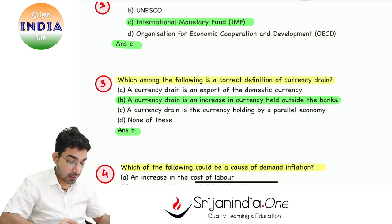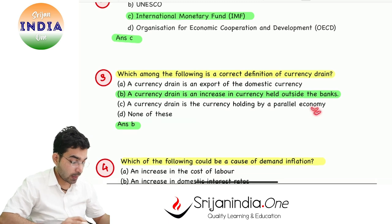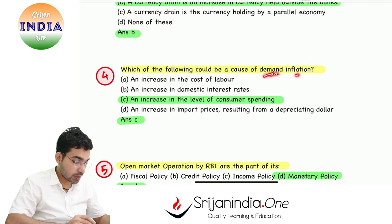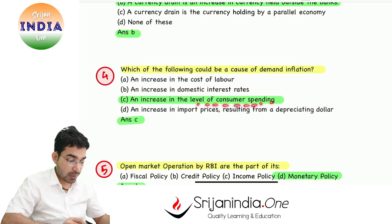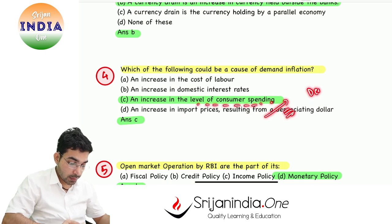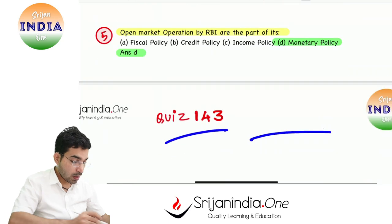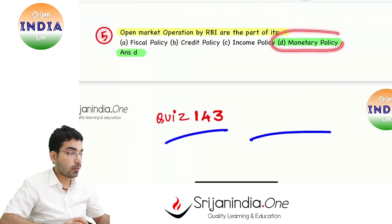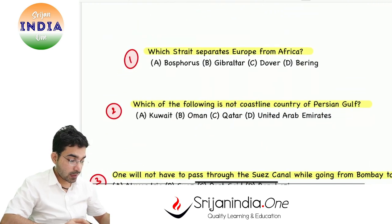Which of the following could be a cause of demand inflation? Demand inflation means an increase in the level of consumer spending - people are spending more, demand is higher, and inflation occurs. Open market operations by RBI are part of its monetary policy. Today's question: which strait separates Europe from Africa?